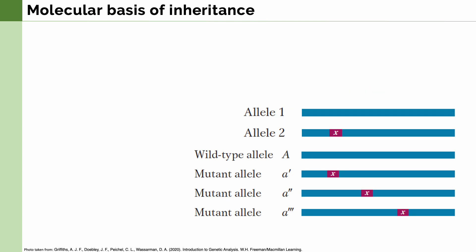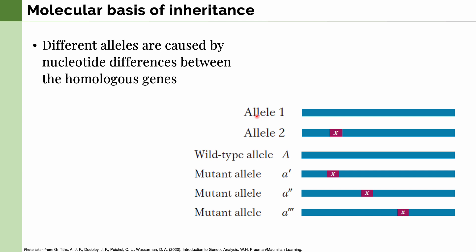Finally, let's talk about the molecular basis of inheritance. Regarding the different alleles: why are alleles different? We now know that different alleles are caused by nucleotide differences between homologous genes, or genes with the same function. In other words, these differences are caused by mutations in specific genes. Here we can see two alleles — one for a normal gene and one with a mutation — as well as a wild-type allele and a variety of mutant alleles that cause different phenotypes.